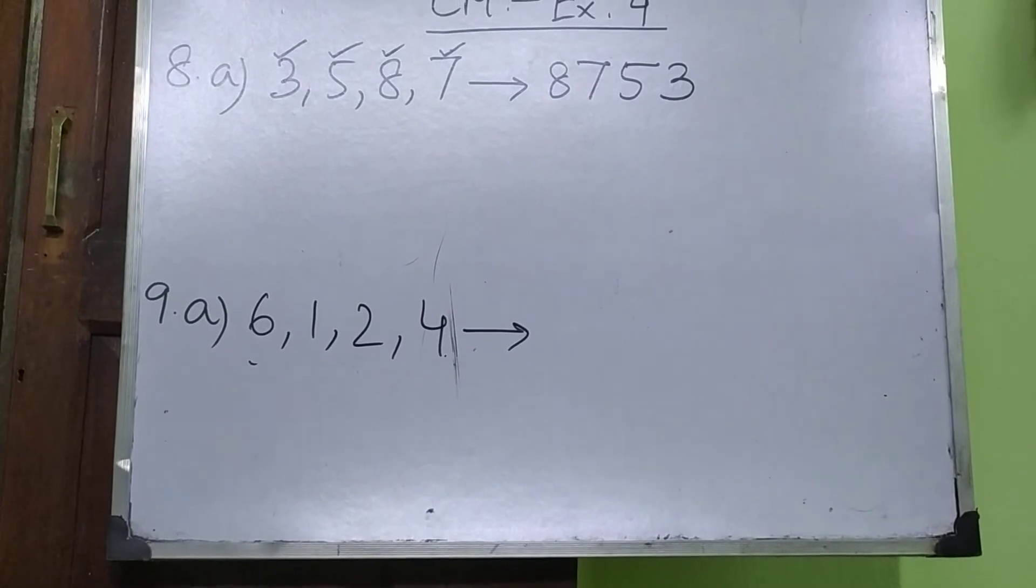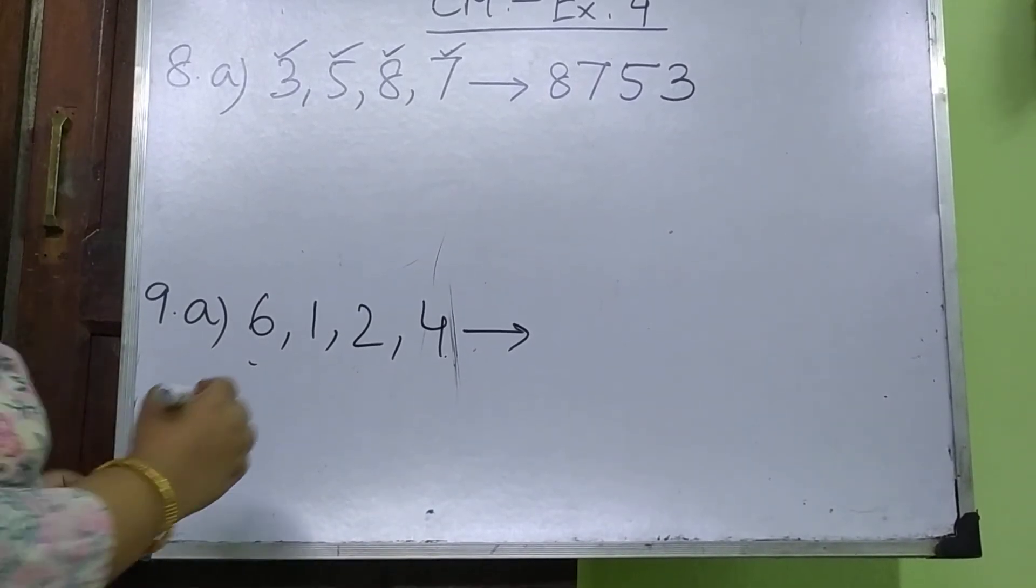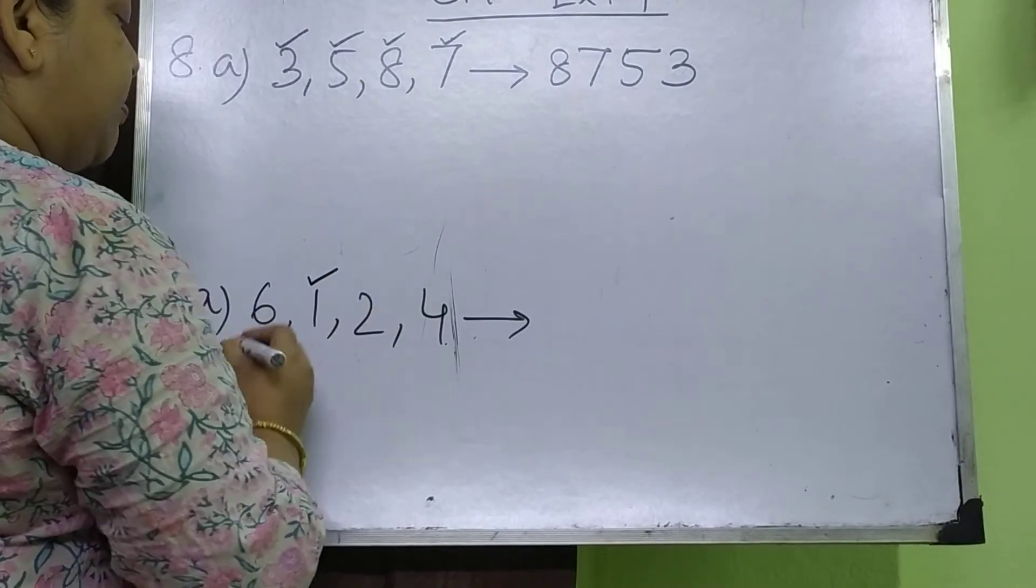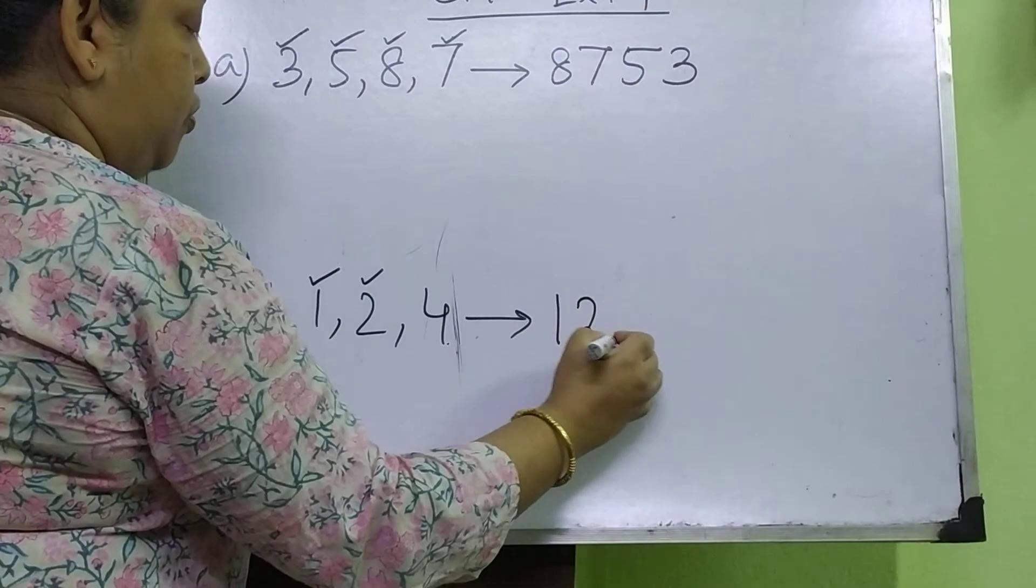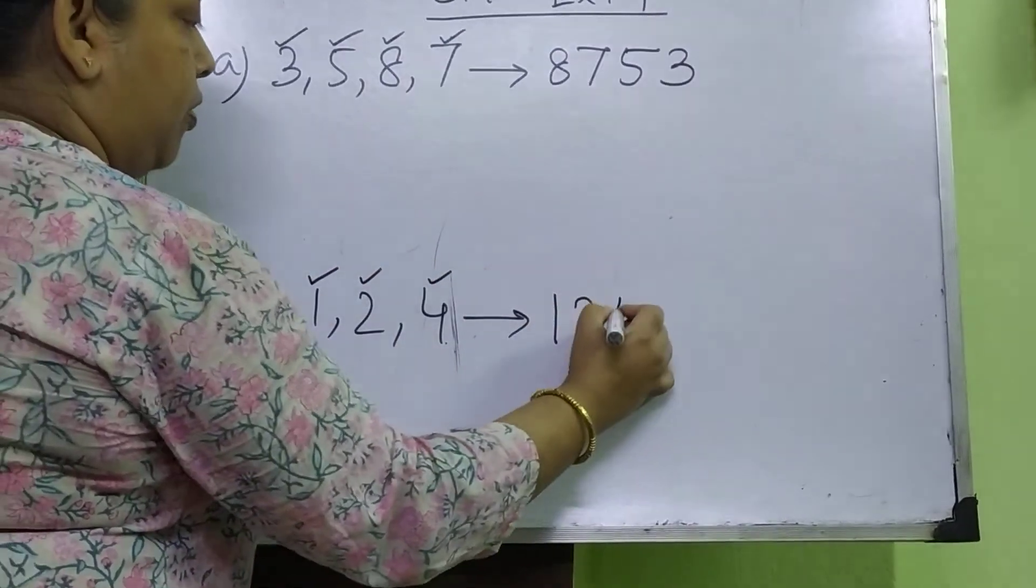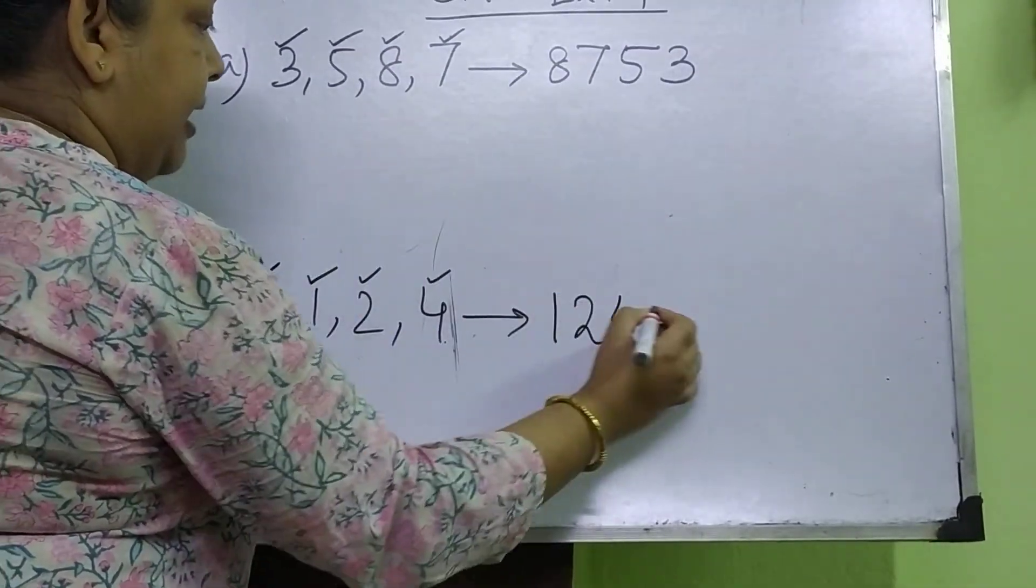So, to form the smallest number, we have to write first the smallest digit. That is 1. Then second largest 2. Then 4. Then 6.